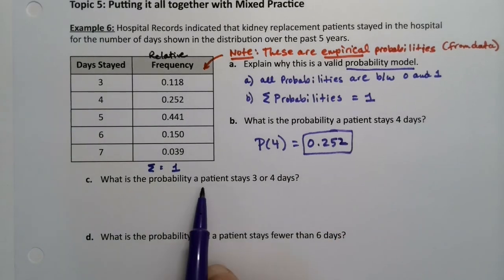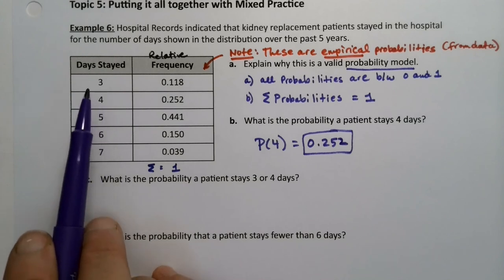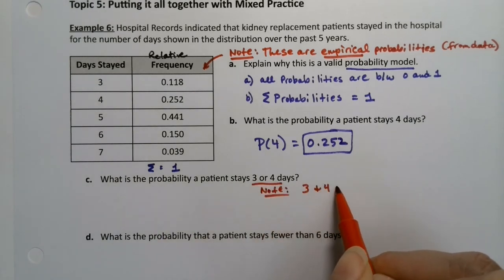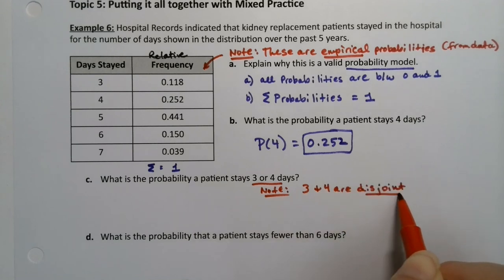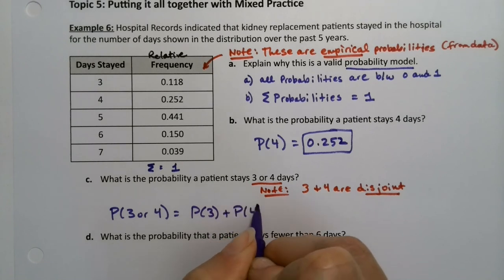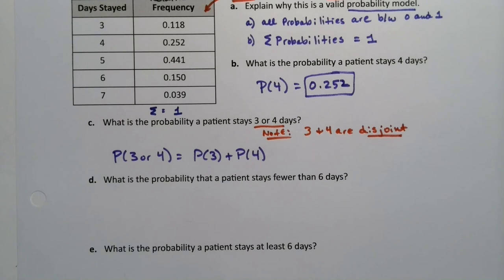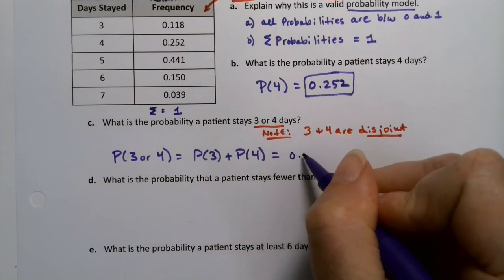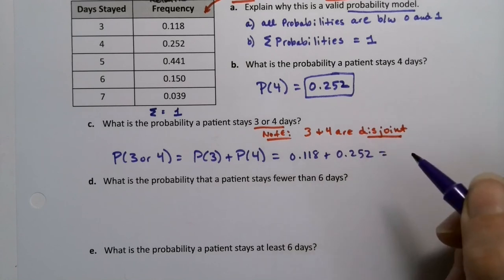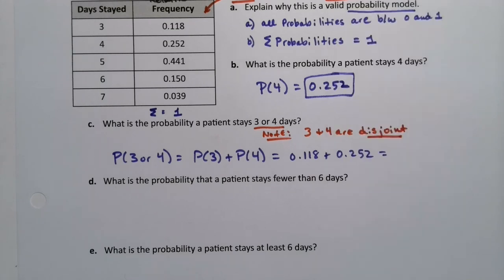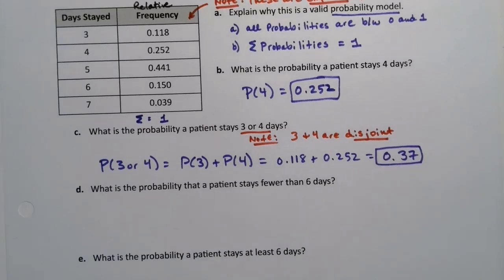What is the probability a patient stays 3 or 4 days? Well, you can't stay 3 and 4. It's either 3 days or it's 4 days. They're disjoint. There's no overlap. Therefore, the probability of 3 or 4 is the probability of 3 plus the probability of 4. I'm using the addition rule for disjoint events. I'm using rule number 1. So the probability of 3 is 0.118, the probability of 4 is 0.252. Grab a calculator and I get 0.37.